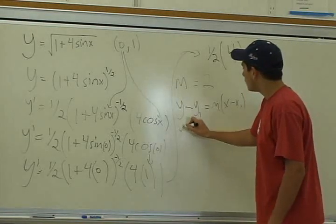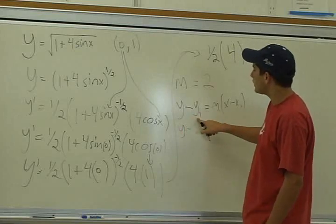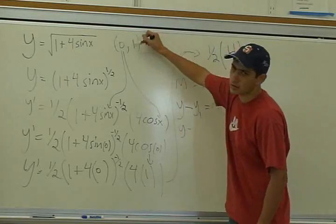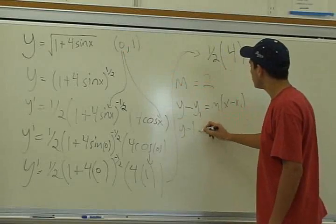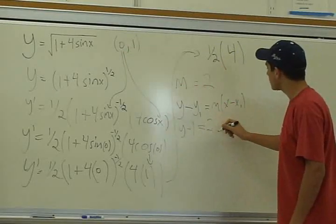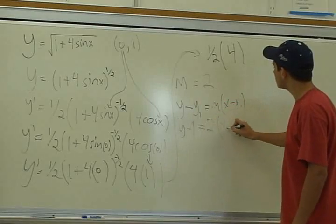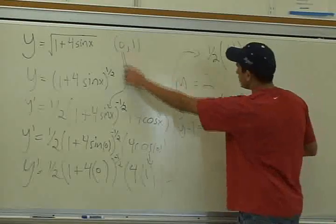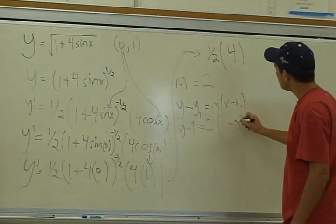So we take y minus—so what's the value of y1? It's 1 right here, because we've got the point given to us. So this is just y - 1. Then the m, as we said here, equals 2, so that's that. Then x - x1, which is 0. Here we go.